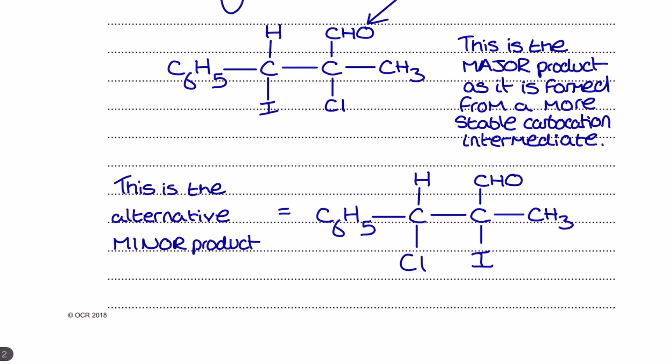If I was to look at the alternative minor product, this carbon atom, as I've already mentioned, had it been the one with the positive charge, would have only been bonded to two other carbon atoms directly. It would have also been bonded to an H, and that makes it a secondary carbocation which is less stable.